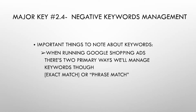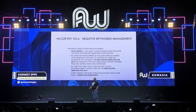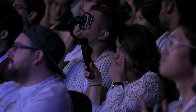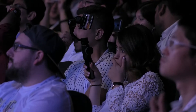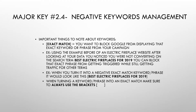So what does that mean? When you start to see the search terms, we're only going to use two types. You have to think to yourself, am I going to make this an exact match or phrase match? Exact match means you tell Google, don't show me for this exact phrase because it's not converting and you're seeing traffic for it.